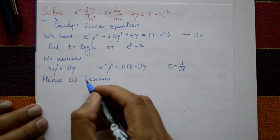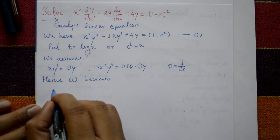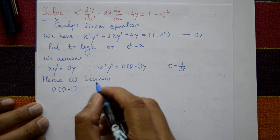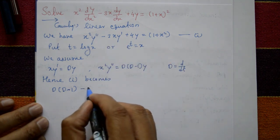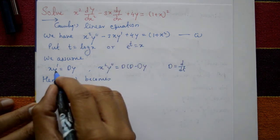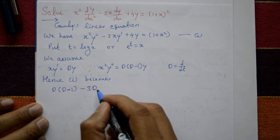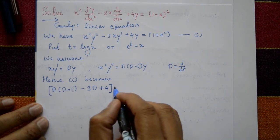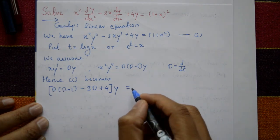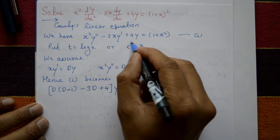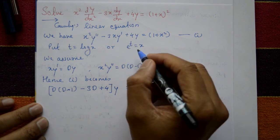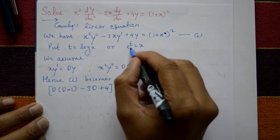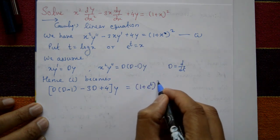Now substitute into equation number 1. x² y'' becomes D(D−1)y, then minus 3 times x y' is minus 3Dy, plus 4y equals 1 plus x squared. Since x equals e raised to t, the right-hand side becomes 1 plus e raised to t, whole square.